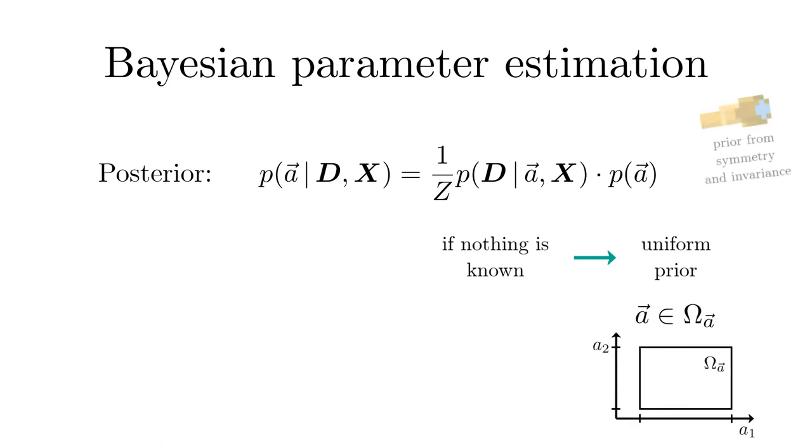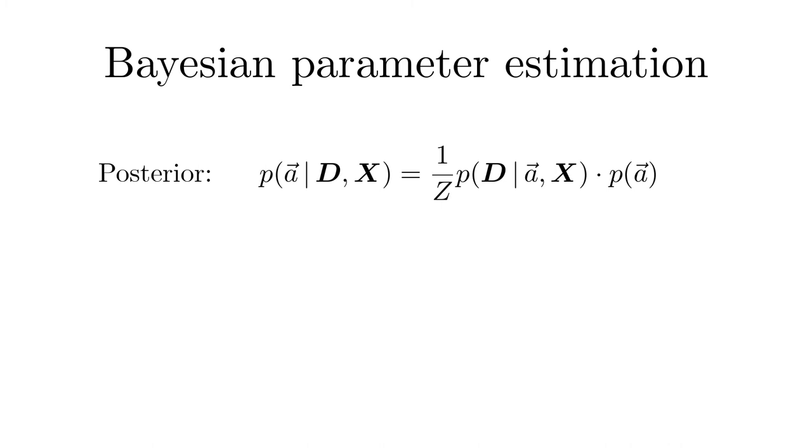We will discuss in the next unit how ignorant priors can be determined purely based on considerations of symmetries and invariances. A crucial element in Bayes' theorem is the likelihood. If the measured errors are uncorrelated, the likelihood factorizes.